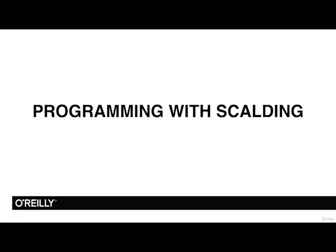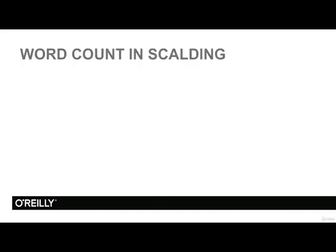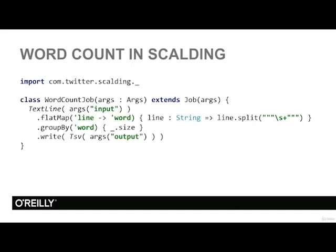In this video we will see the basics of programming with Scalding. Let's do the obligatory word count program. First, we have the import statement, importing from Scalding libraries — the underscore at the end indicates we are importing everything. The import statement has no consequence on the runtime; it is just for the compiler. Then we declare a class WordCountJob, pass some arguments, and say that this class extends Job. The Job is the superclass for WordCountJob and provides some common functionality.